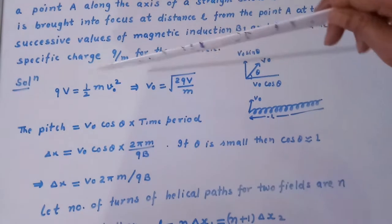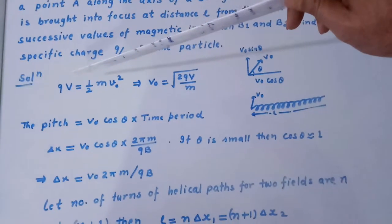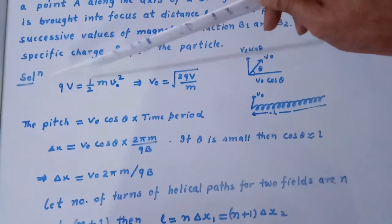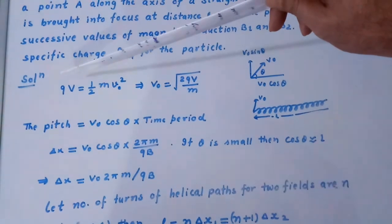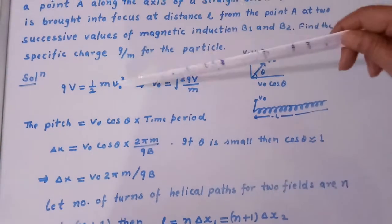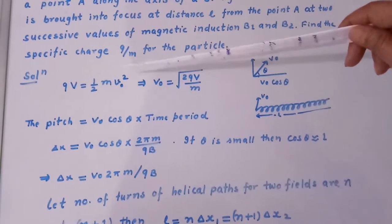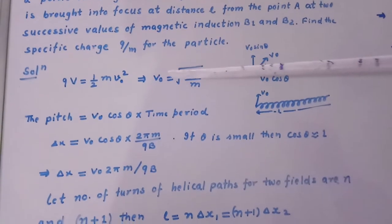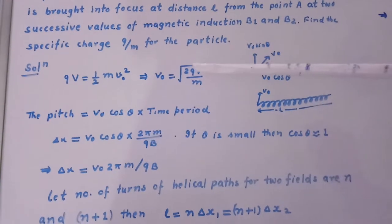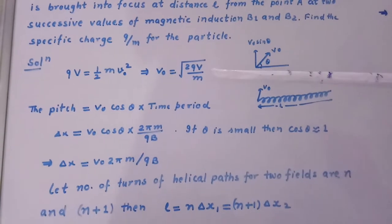So now we know that kinetic energy of a particle which has charge Q, if it is accelerated through potential difference V, then QV equal to half M V0 square, which gives V0 equal to square root of 2QV divided by M.